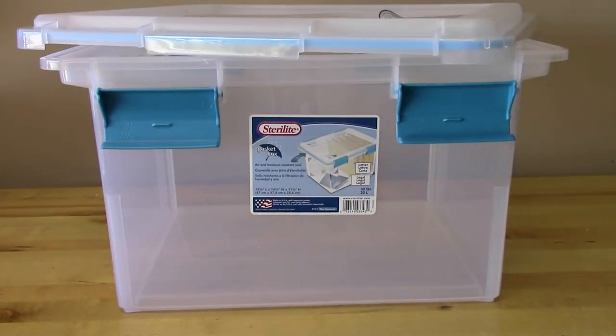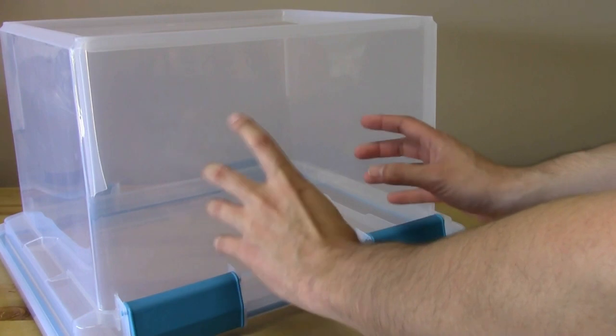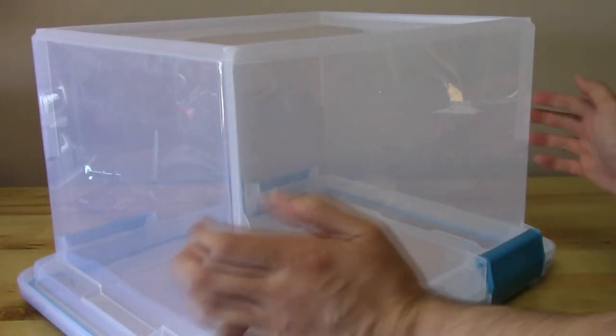If your box does not have a foam liner like that, that can easily be done with a strip of foam weather stripping or something to that effect. So the first thing we'll need to do is make ports for the gloves. We want to do that at a height that's nice and comfortable for us. So for me, that's probably about halfway up the box.